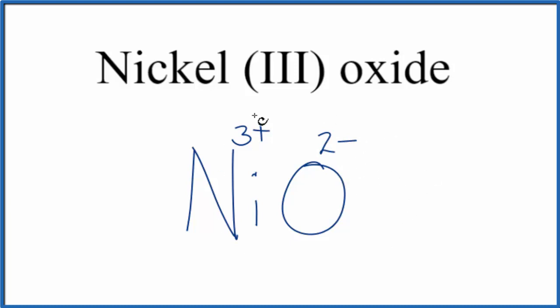So we need to get this to all add up to zero. There's a little trick called the criss-cross method we can use that'll help us. We could take the 2, move it down here, and the 3 over here. When we do that, we end up with Ni2O3.